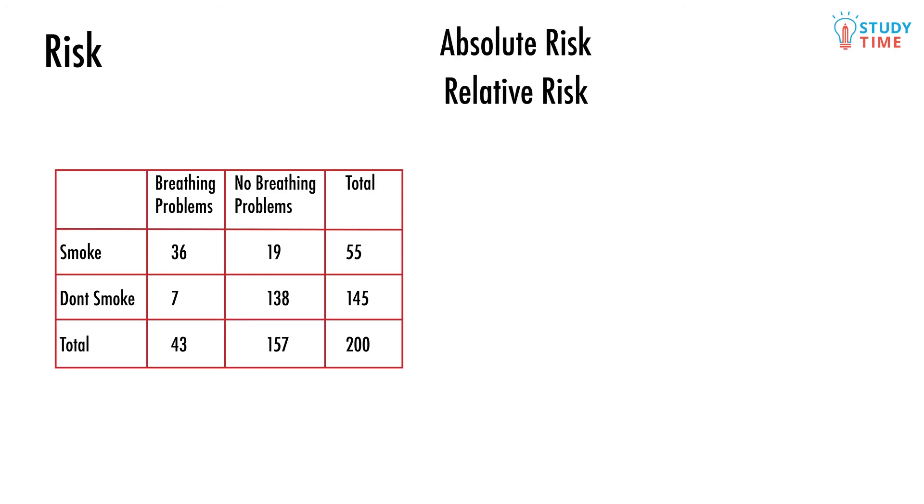There's two kinds of risk. Absolute risk is where we just find the proportion or probability of something happening, and then relative risk is where we compare the risk of one thing to the risk of another.